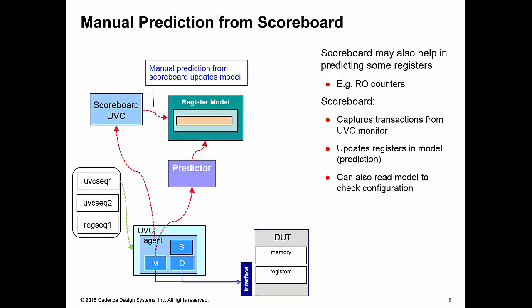So, for example, when it receives a packet sent to a certain address, it can read the register model to see if the enable bit is set in the configuration register. And if it is, it can then read the current value of the counter, increment it and then write it back into our register model. So now the nice thing about this is your UVC data can be random because we rely upon the scoreboard to build up the expected results inside of our register model.